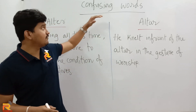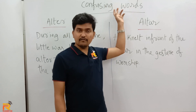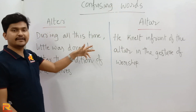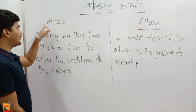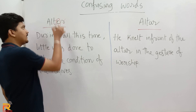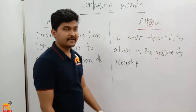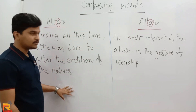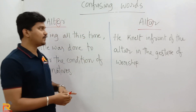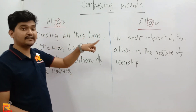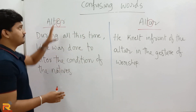Welcome back to Ranker. Today we are going to have a wonderful session on confusing words. Confusing words are words which are quite similar or identical to each other. The difference between these words is quite unnoticeable. For example, 'alter' contains the letter E whereas 'altar' contains the letter A. When such words appear in exams, people end up using the meaning of one word for the other.